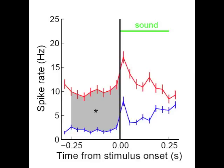The mixture of sounds begins at the time indicated by the vertical line. During the shaded time period on the left, the rat is about to select a sound from the mixture, but he hasn't heard it yet. You can see that the firing rate is much higher when the rat is about to select the tone, the red trace.